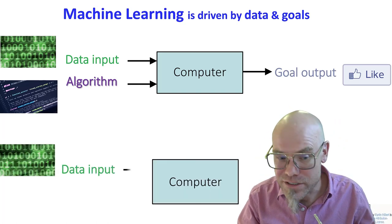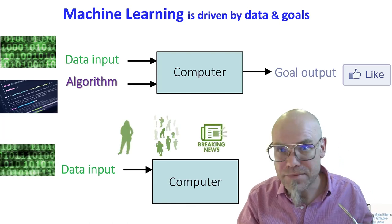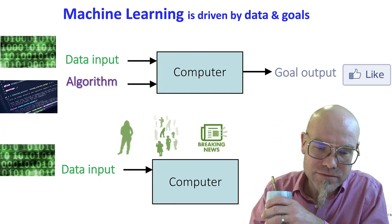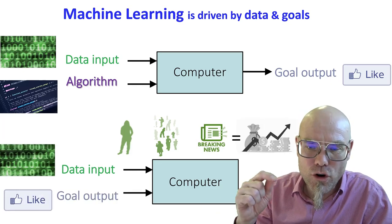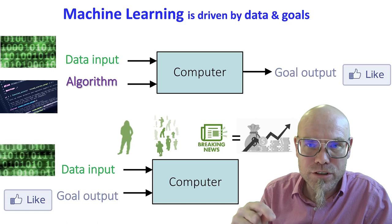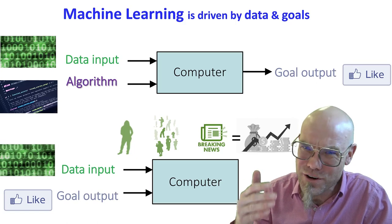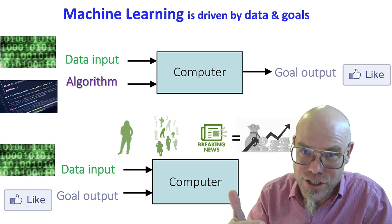Now what machine learning does is it turns it around. We have the data—on our social network, for example, we have people and your friends and the content—and then we have the goal output. What's the goal output of a social media company? Well, it's a company, so per definition it needs to make money, period.